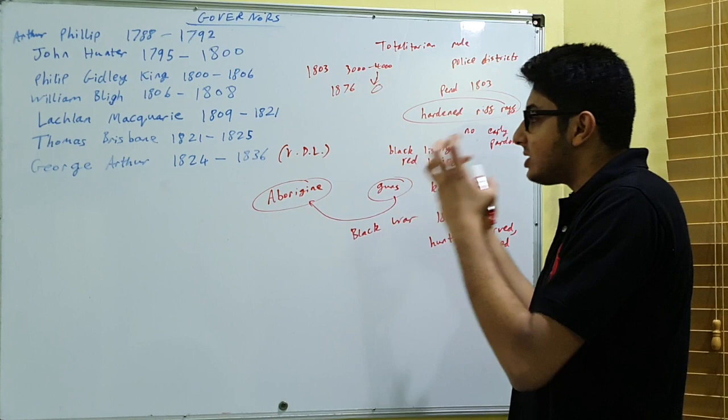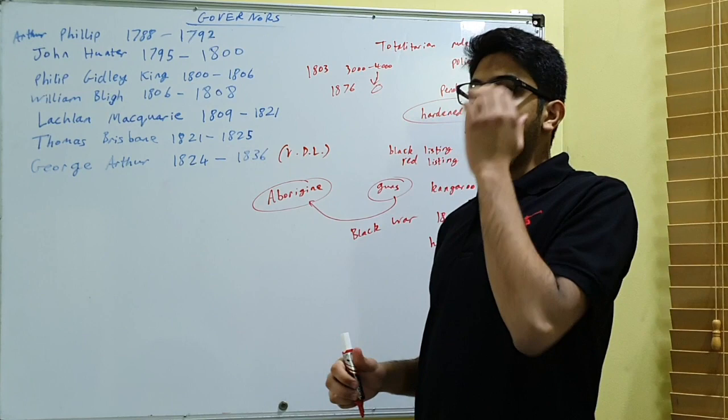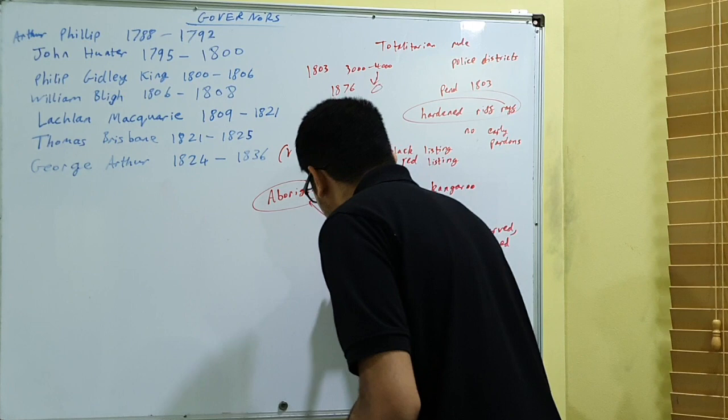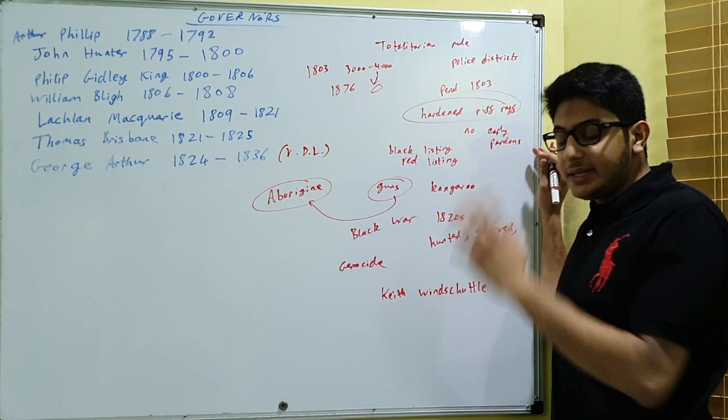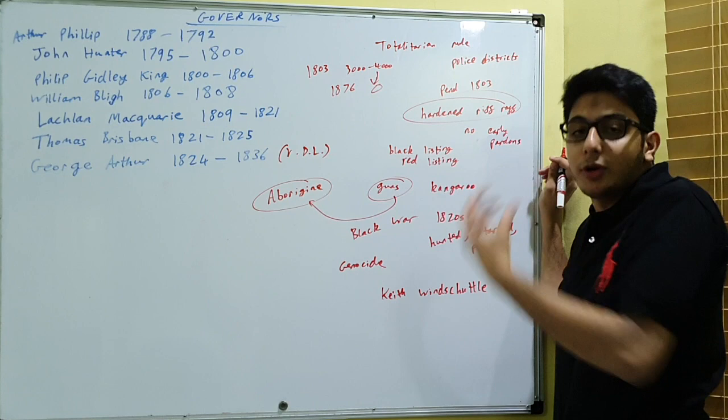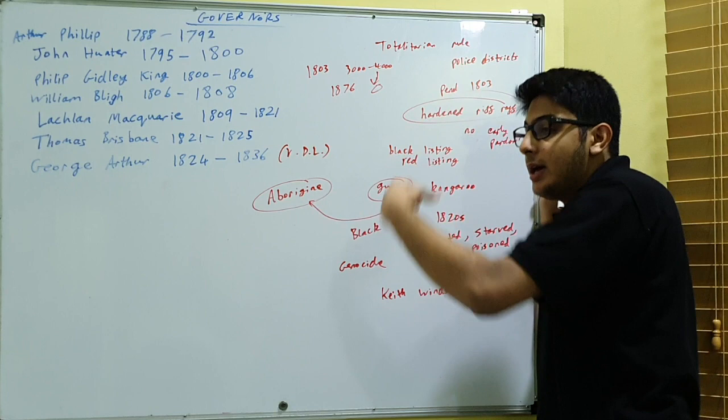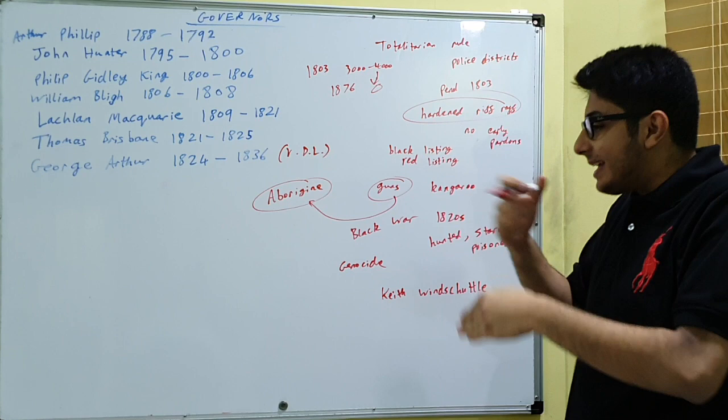So obviously a detrimental, highly disastrous impact on the aborigine population. Now, in terms of how far this can be considered a genocide, some historians call it genocide, but some historians like Keith Windshuttle argue against labeling it a genocide. I think he said something like, Van Diemen's land hosted nothing that resembled genocide, which requires murderous contention against a whole race of people.